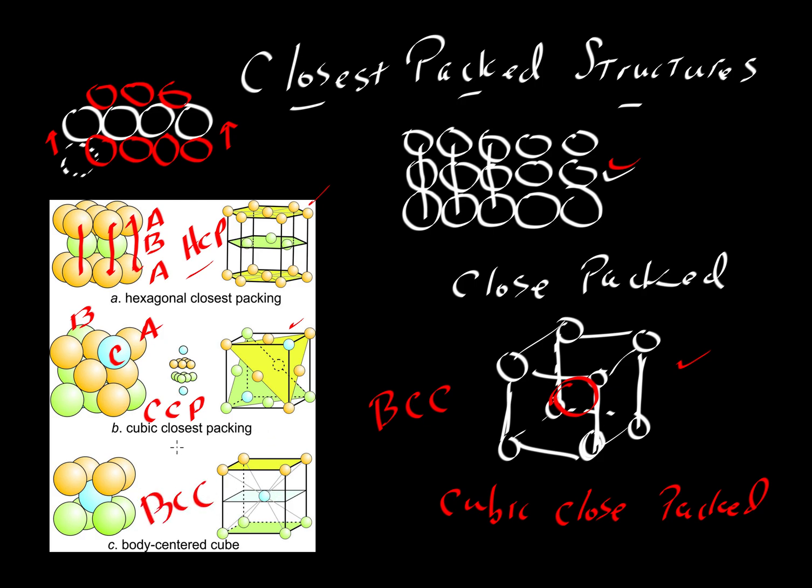Again, that is not a closest packed structure, but it is a close packing of the atoms. And then it gives us this particular, or this would be a cesium chloride structure, for example, this case here. So we have different kinds of ways of packing atoms together, especially if they're all the same size.